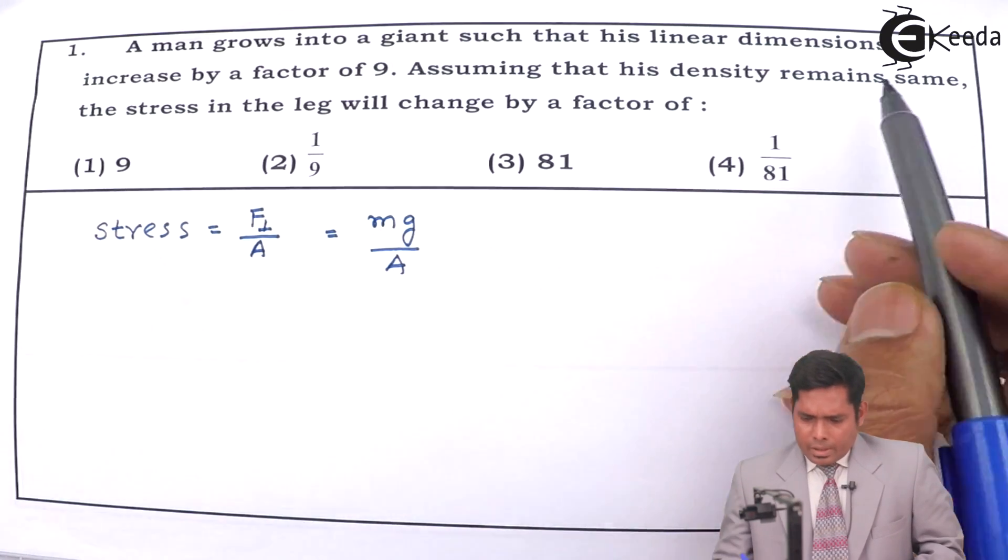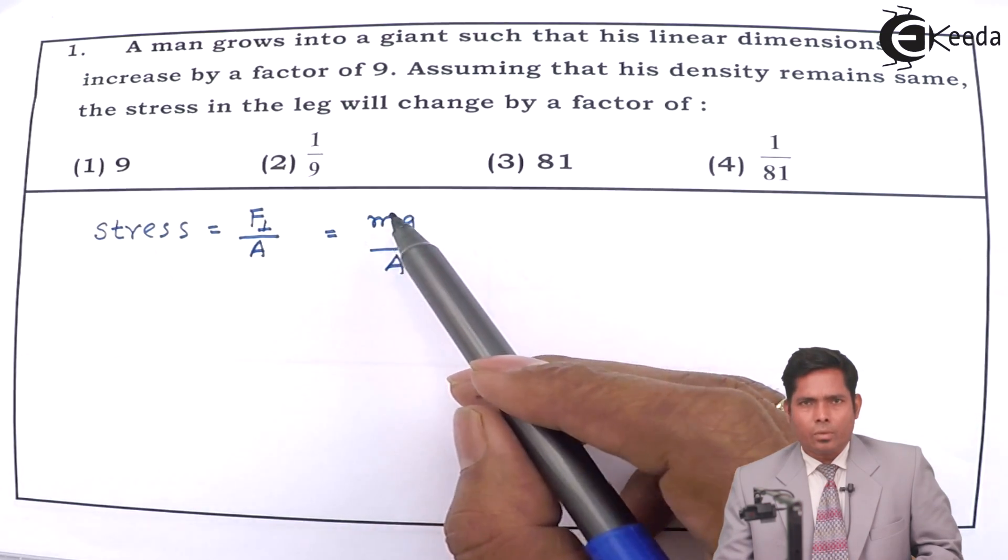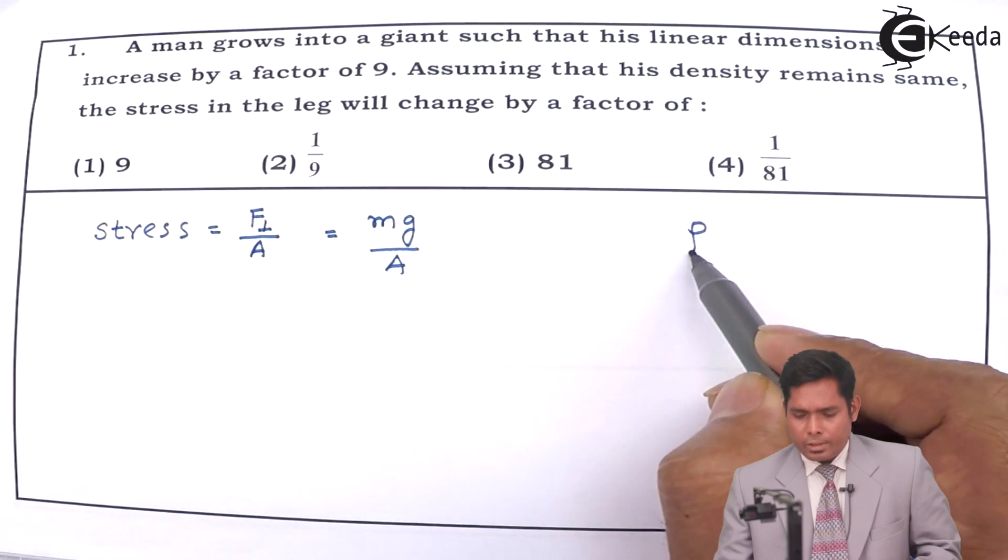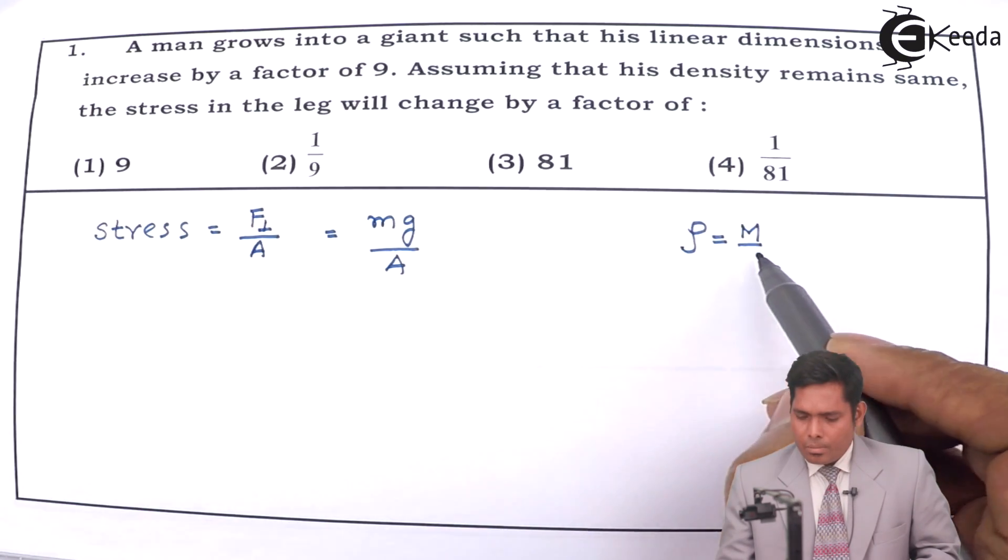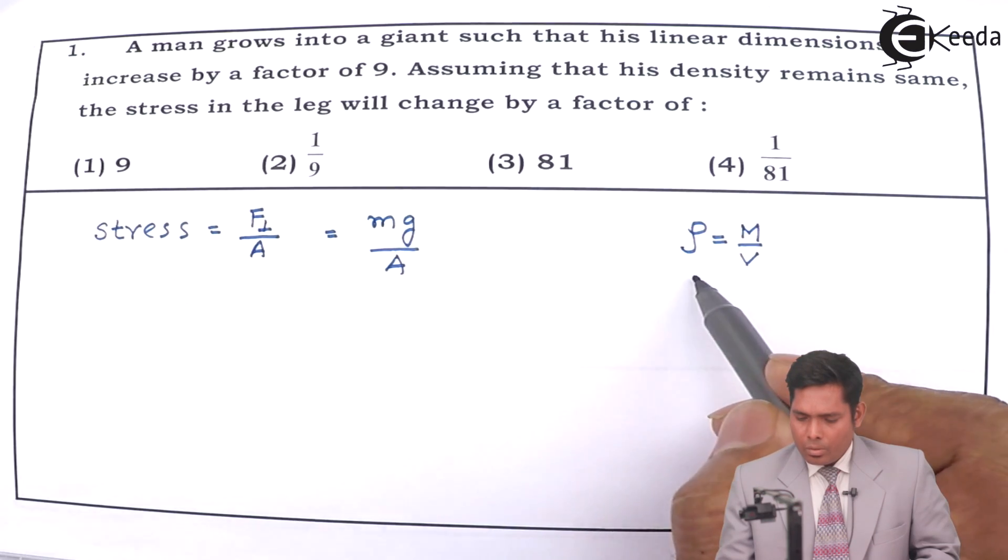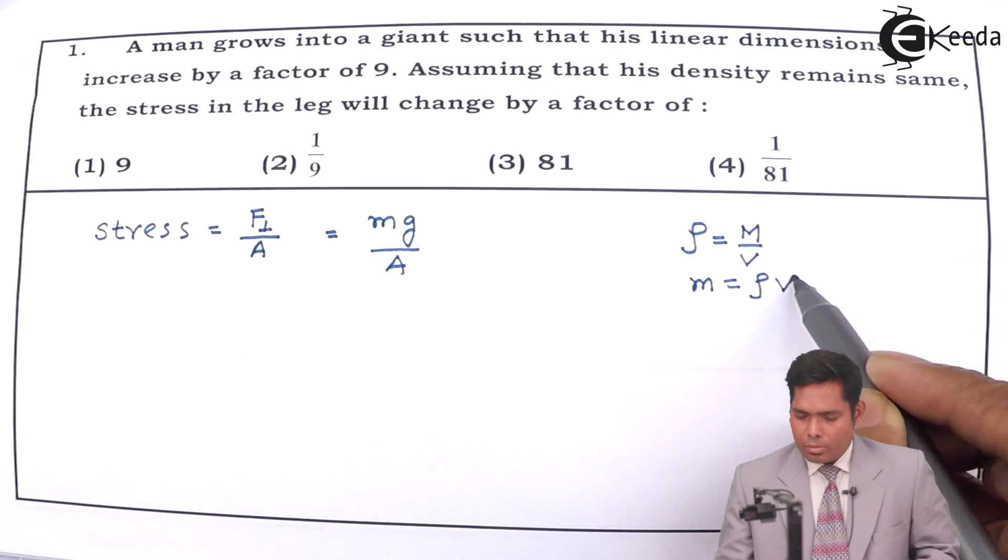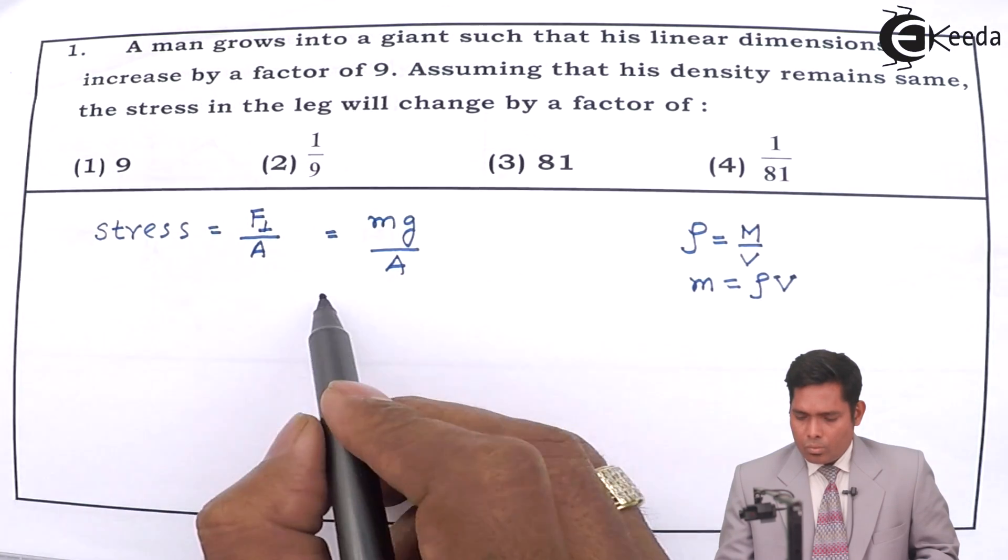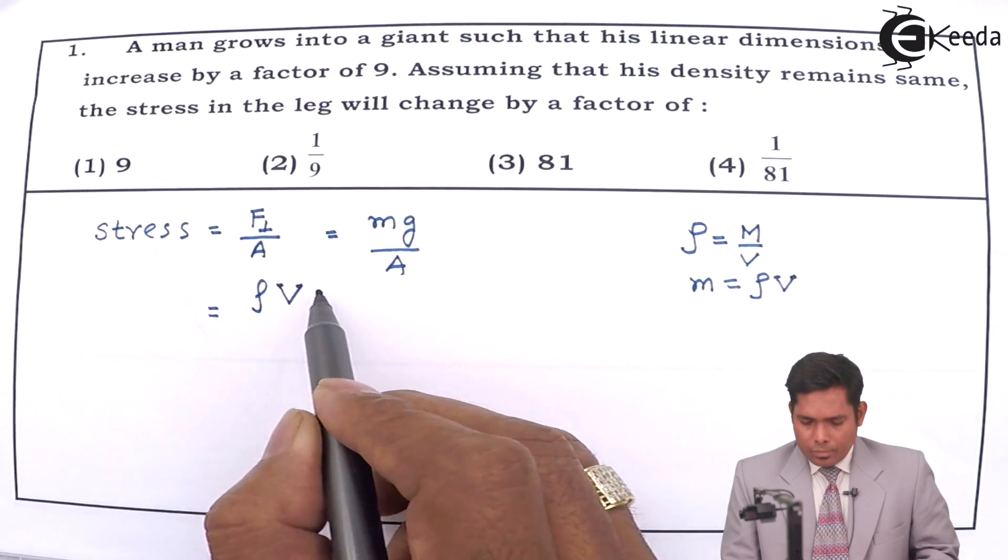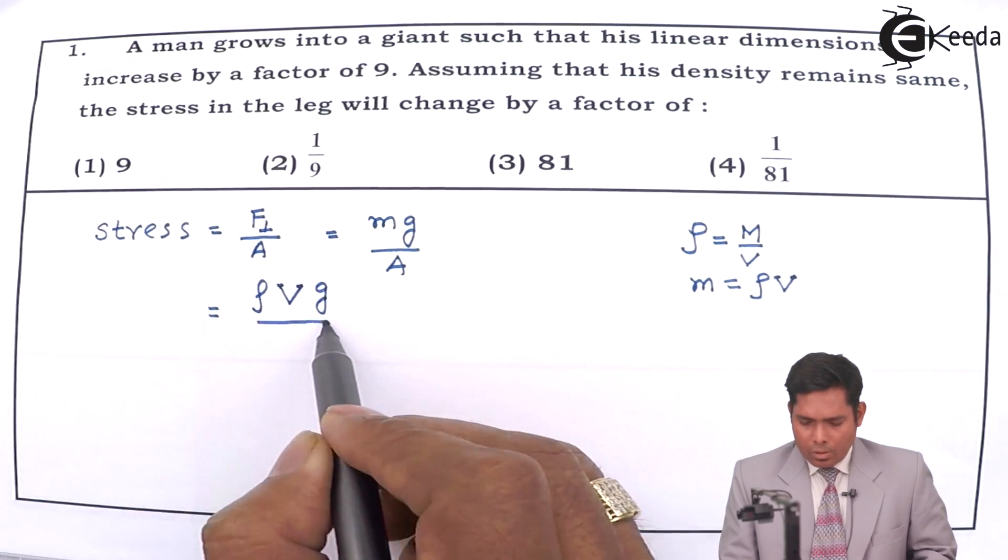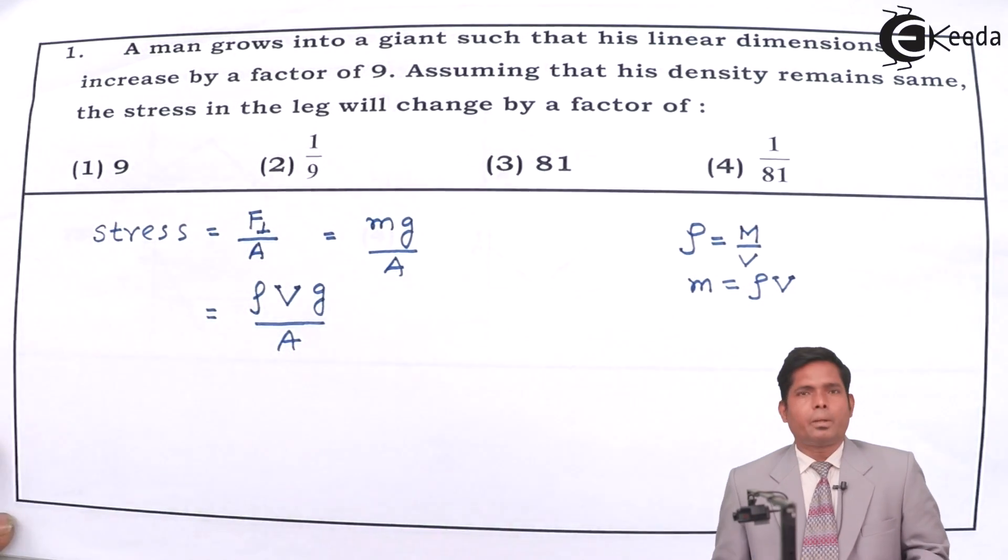Now, it says that the density remains same, so I will write mass in terms of density. When you write mass in terms of density, because we know that density is mass upon volume, so mass will be density into volume. So, write here density into volume into g divided by A.